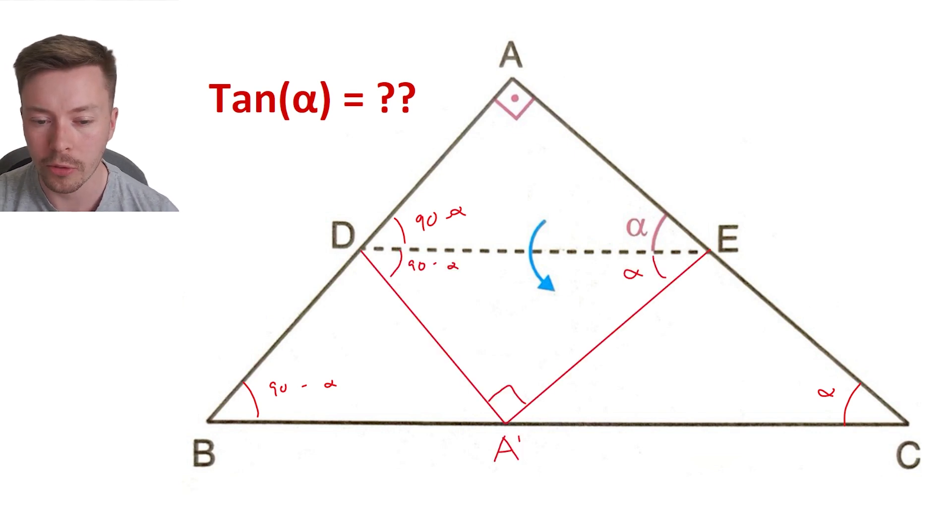Now if we draw in what the folded triangle would look like, we get this, and then we've got this point A apostrophe down the bottom as well. Let's mark on their equal side lengths because obviously it's been flipped down.